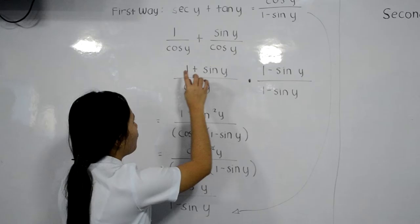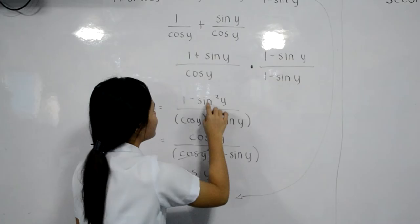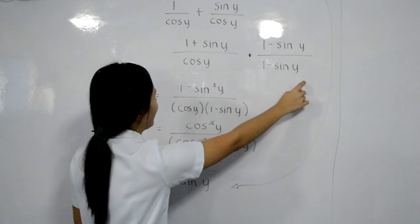Then we can now foil: 1 positive times negative sine y, times negative sine y equals sine squared y. Then we can multiply cosine y times 1 minus sine y.